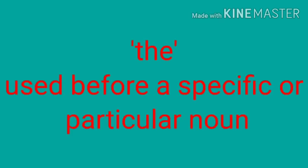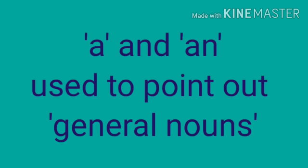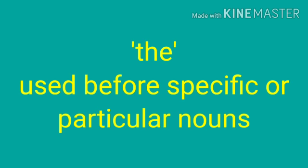The last article is 'the'. The is used before a specific or particular noun. You know noun, right? Nouns are naming words. So, 'a' and 'an' are used to point out general nouns — very general naming words. But 'the' is used before a particular noun.